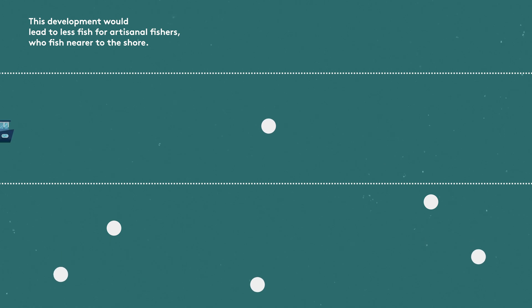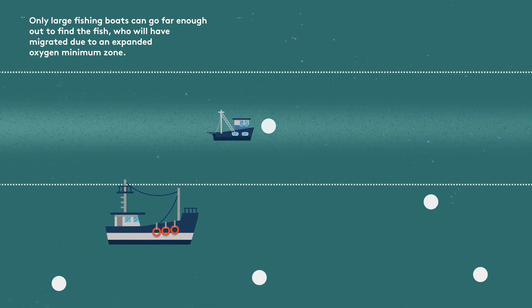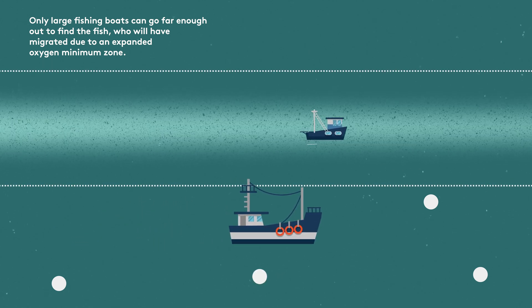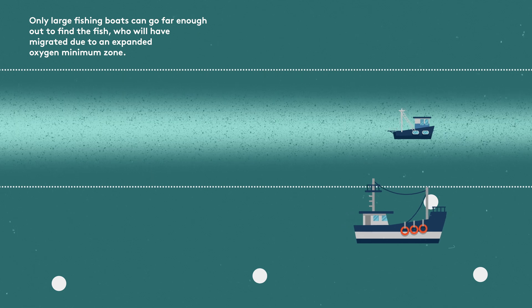This development would lead to less fish for artisanal fishers, who fish nearer to the shore. Only large fishing boats can go far enough out to find the fish, who will have migrated due to an expanded oxygen minimum zone.